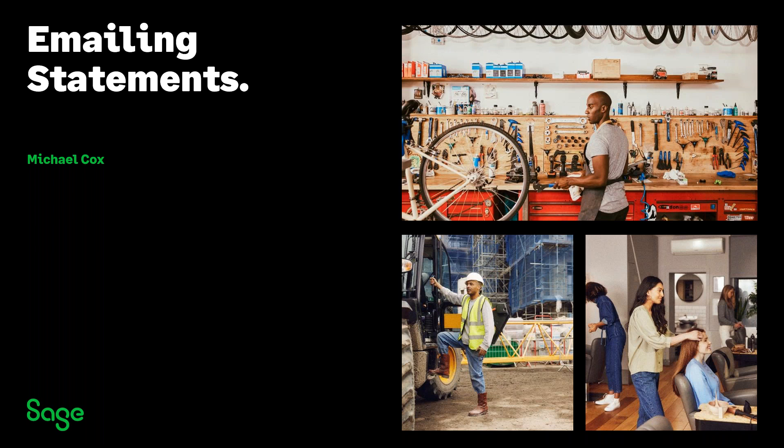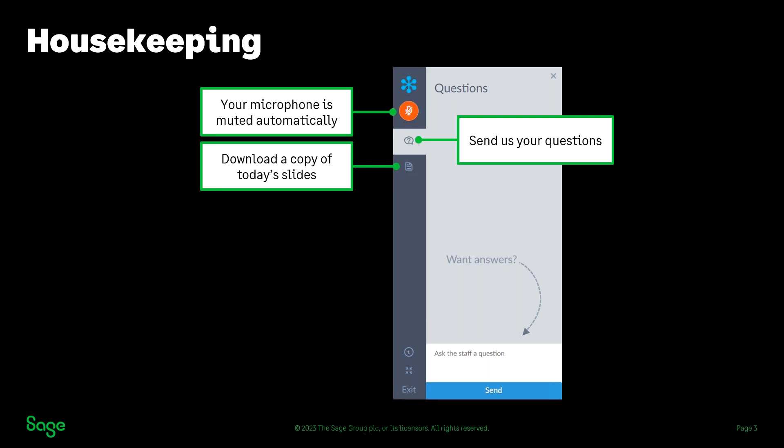A little bit of housekeeping before we get started. You don't need a microphone for these sessions — if you've got one enabled, it's muted automatically and you can't unmute yourself. That means you can't verbally ask questions, but you can type them in the questions panel, which you should see in the bottom right-hand corner of your screen. If you can't see it, click the little speech bubble icon on your toolbar. We'll try to answer as many questions as we can, either directly, with a link to a Help Centre article, or by advising you to contact our support team.